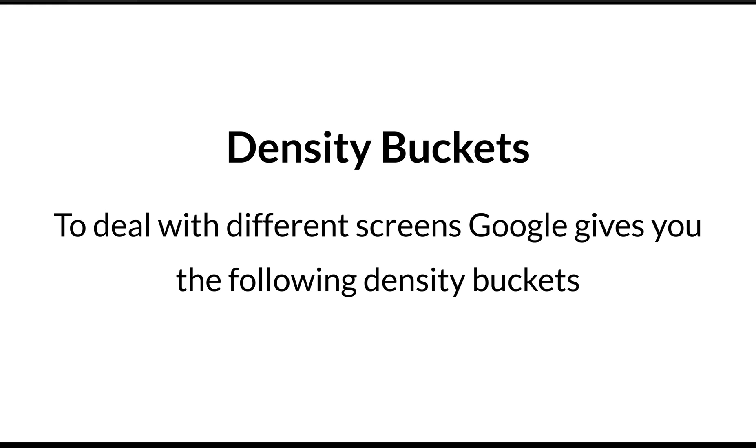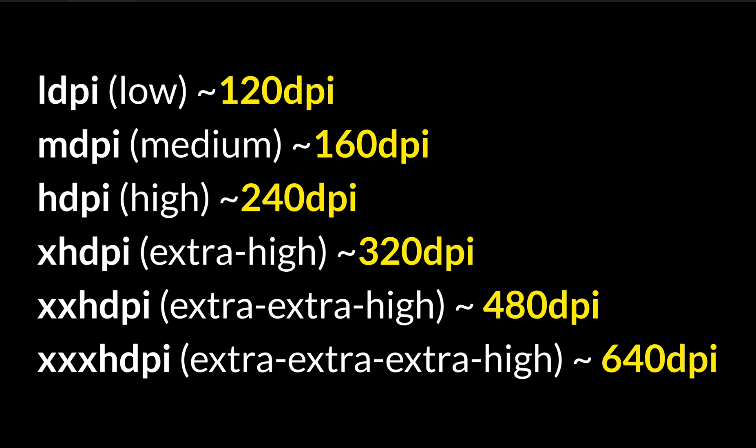There's also the concept of density buckets. To deal with different screens, Google provides the following density buckets: LDPI (low) at 120 DPI, MDPI (medium) at 160 DPI, HDPI (high) at 240 DPI, XHDPI (extra high) at 320 DPI, XXHDPI (extra extra high) at 480 DPI, and XXXHDPI (extra extra extra high) at 640 DPI. These are clusters that developers use to keep everything responsive.